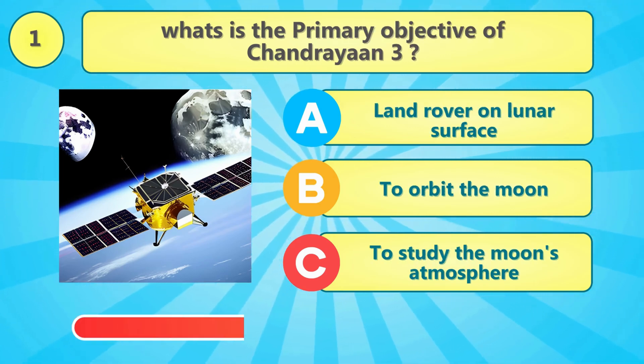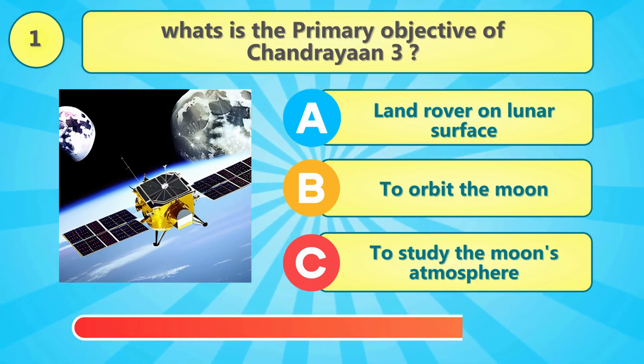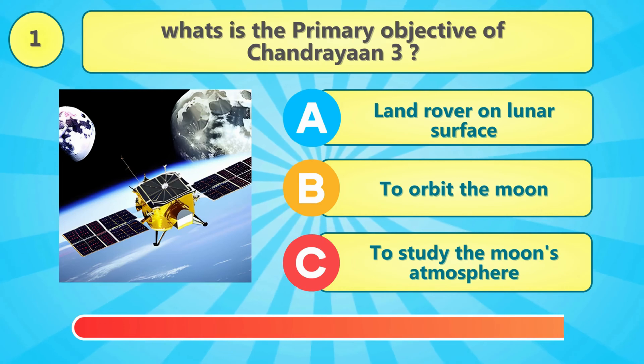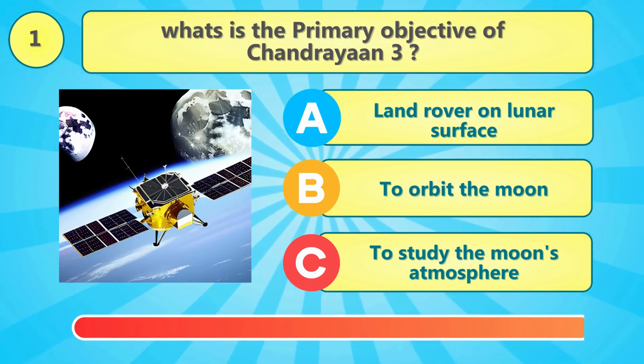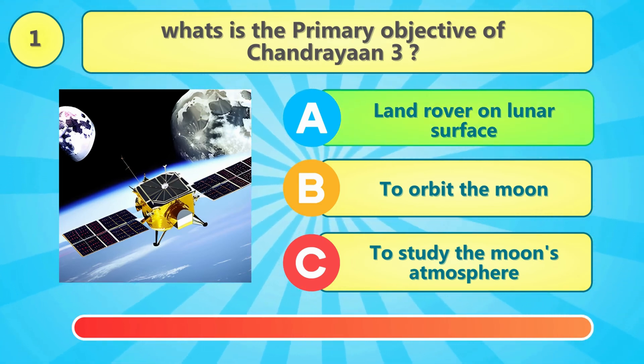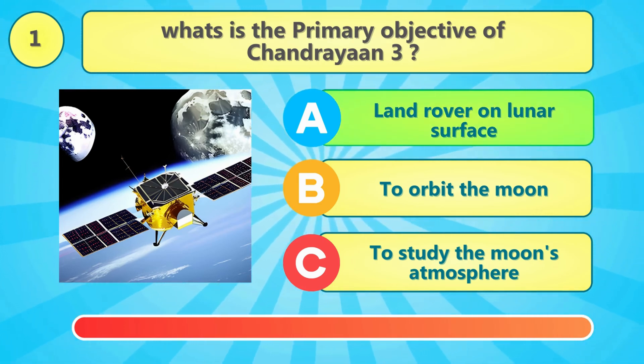What is the primary objective of Chandrayaan 3? The answer is: to land a rover on the lunar surface.